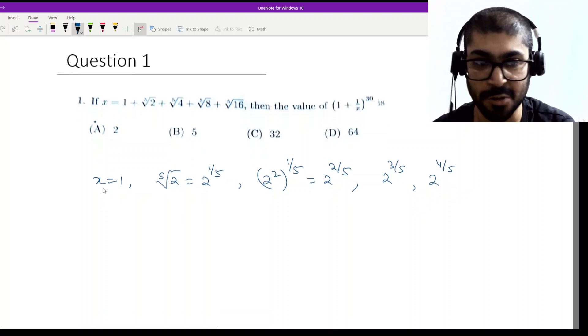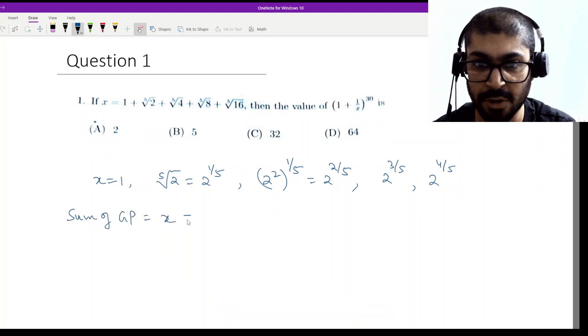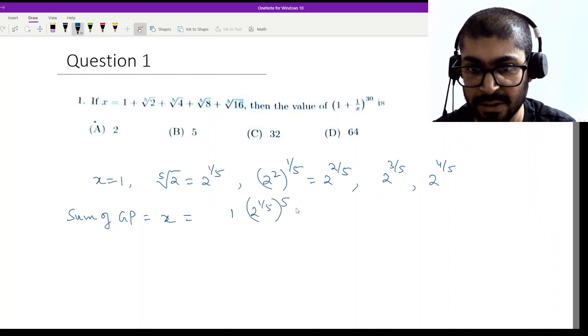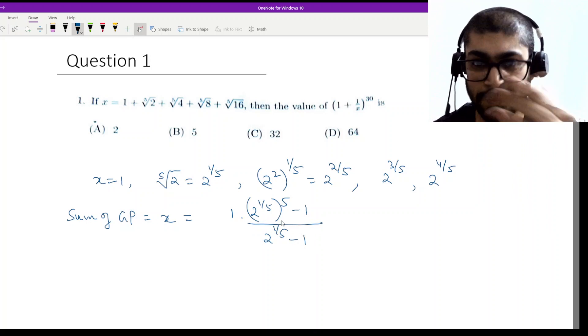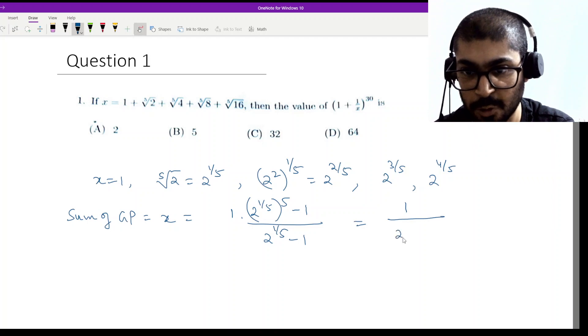Now I have to find (1 + 1/x) to the power. So I apply the sum of GP. Sum of GP will be x equal to a(r^n - 1)/(r - 1). So what is a? 1. What is r here? r is 2 to the power 1 by 5. And the number of terms are 5. So this is (2^(1/5))^5 minus 1 by 2^(1/5) minus 1. So 2^(1/5) to the power 5 is 2 to the power 1 minus 1. This is basically 1 by 2^(1/5) minus 1. Therefore 1 by x will be 2^(1/5) minus 1.